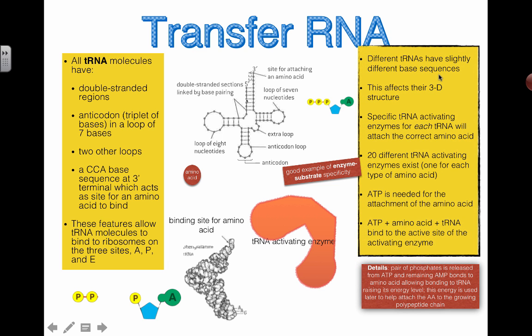What else do we have here? They have slightly different base sequences, which means that each tRNA has a unique three-dimensional shape. It affects their 3D structure. Like I said before, one specific tRNA activating enzyme will match each of the different tRNA molecules that exist. There are 20 different tRNA activating enzymes because in general there are 20 different tRNA molecules that can attach the 20 different amino acids that are mainly used in translation.